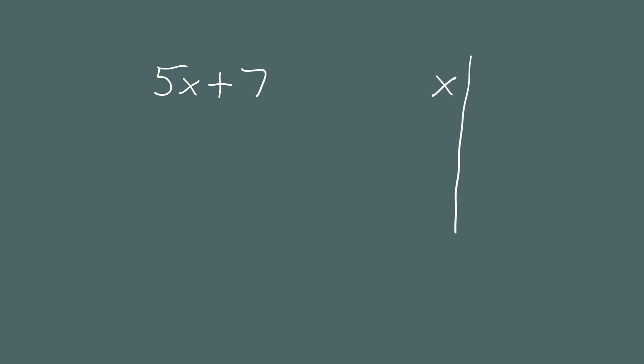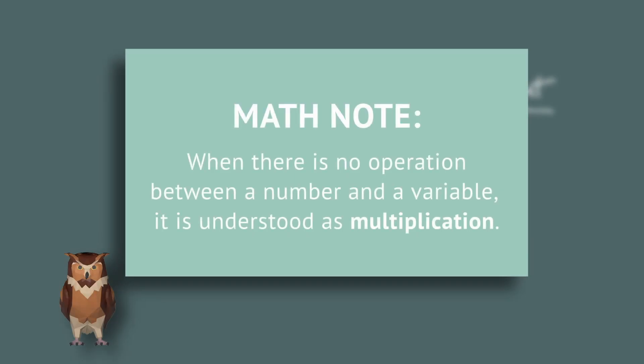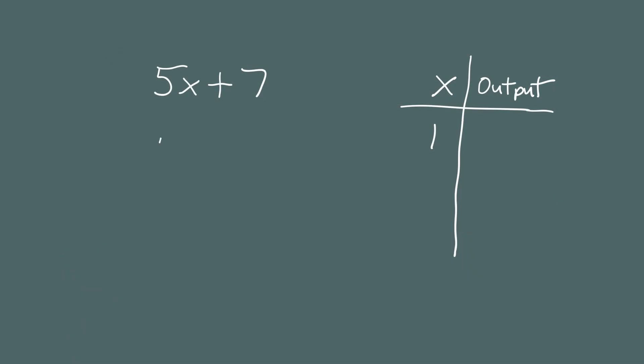In the first column we will put what number we put in for x, and in the second column we will have what calculation we get — the output. Let's begin with the number 1. In this expression 5x plus 7 we're going to replace the letter x with the number 1. Now here you need to be careful: when you have a number next to a variable like this with no operation in between, it's understood that you mean multiplication. So when we put 1 in for x we get 5 times 1 plus 7, which equals 12. So in our table when x is 1 the output is 12.